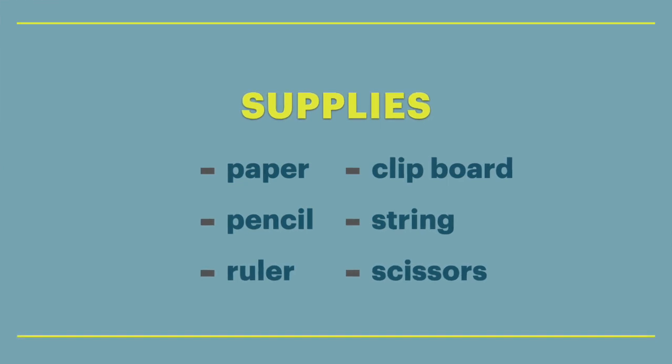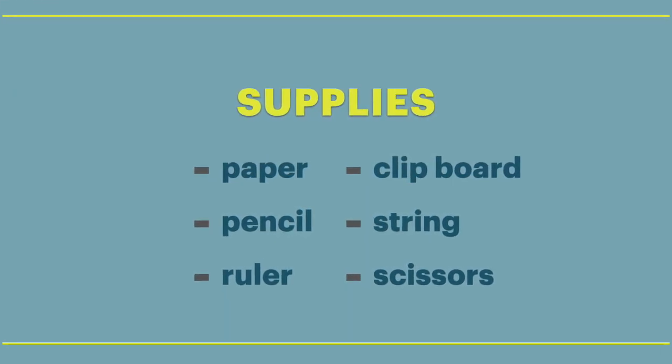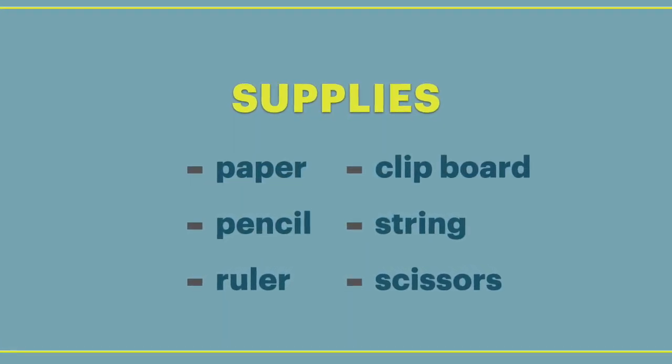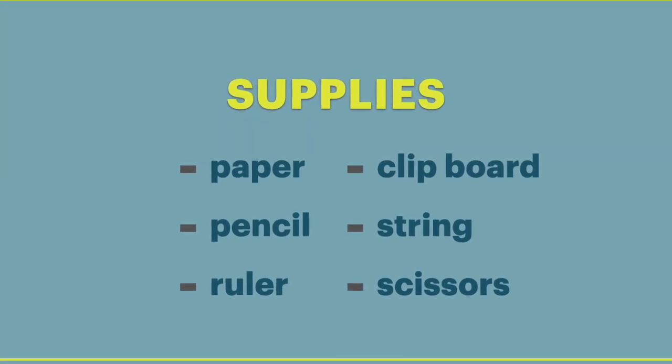For this discovery challenge, Biodiversity Breakdown, we're going to investigate biodiversity in our neighborhoods by measuring species richness in two different places. Think about two different habitats near you — I'm going to choose a lawn and a nearby stream bank. You'll need paper, pencil, a clipboard, string or yarn, a ruler, and some scissors.